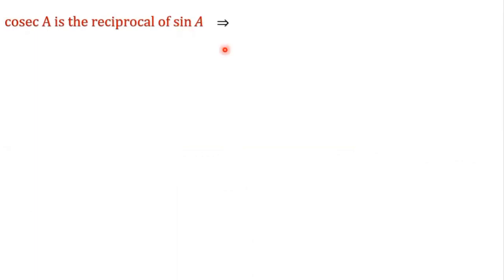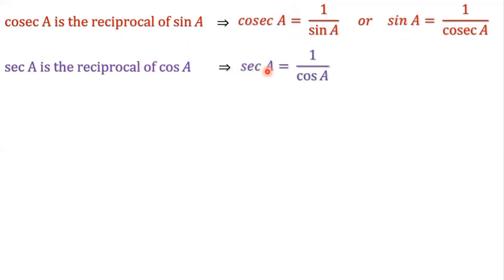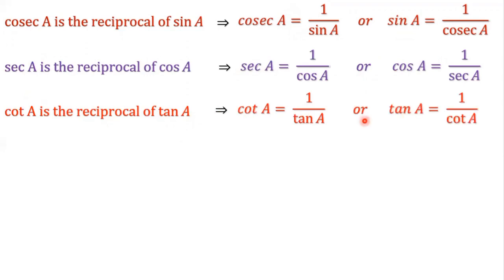Now observe the ratios. Cosec A is the reciprocal of sin A, so cosec A can be written as 1 by sin A, or sin A is equal to 1 by cosec A. Sec A is the reciprocal of cos A, so sec A can be written as 1 by cos A, or cos A is equal to 1 by sec A. Cot A is the reciprocal of tan A, so cot A can be written as 1 by tan A, or tan A can be written as 1 by cot A.